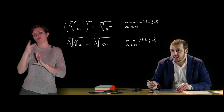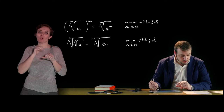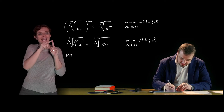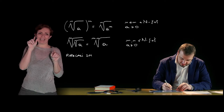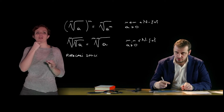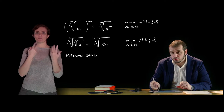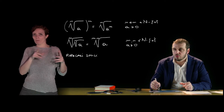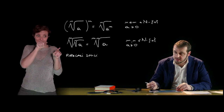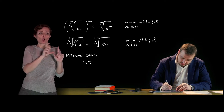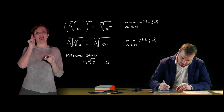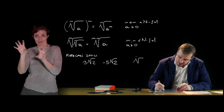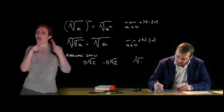Other operations on radicals are addition and subtraction, which are possible only when the radicals are similar. Two irreducible radicals are called similar if they have the same index and the same radicand, differing only in their coefficient. For example, 3√2 is similar to 5√2 or −5√2, but not to a radical with a different index such as the cube root of 2, or a different radicand such as √7.